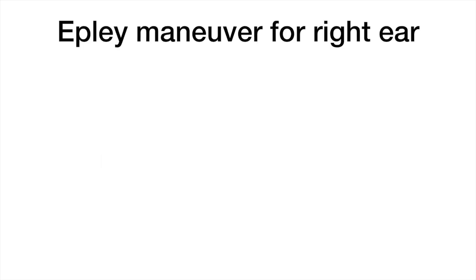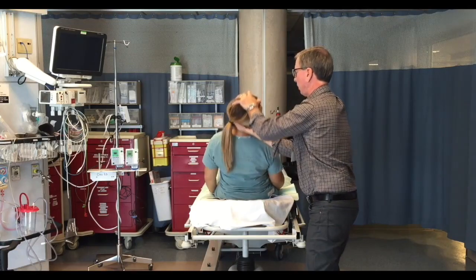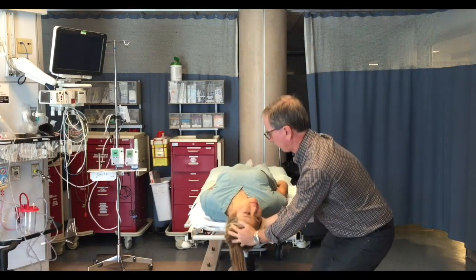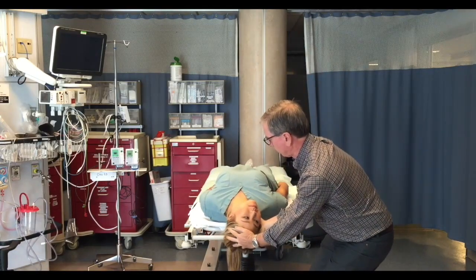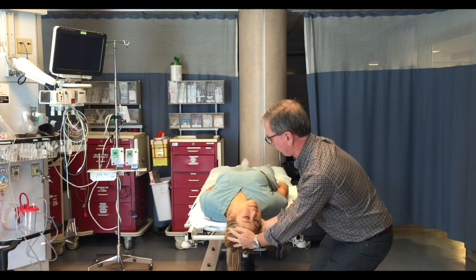In this demonstration, the first Epley maneuver shown is for right ear posterior canal BPV. The first position is to place the patient in the positive Dix-Hallpike side, which for the right ear Epley is with the head turned 45 degrees to the right and the head extended 20 to 30 degrees over the edge of the bed.